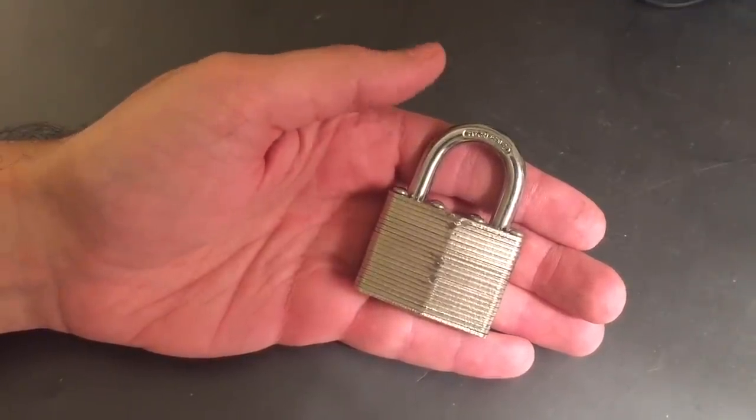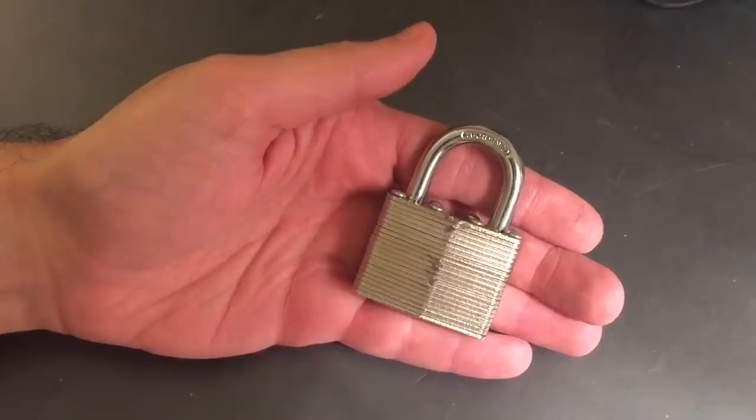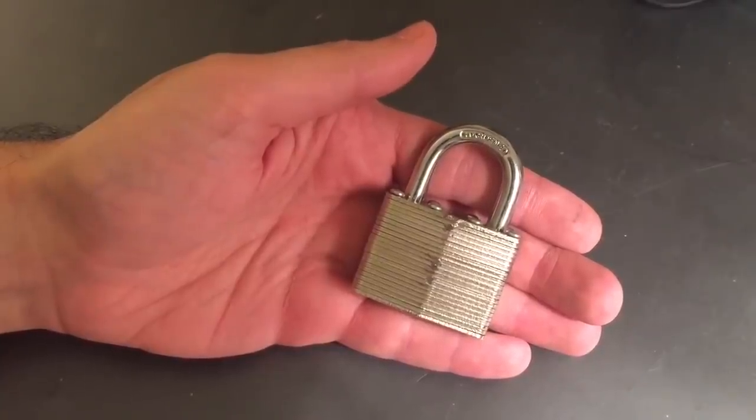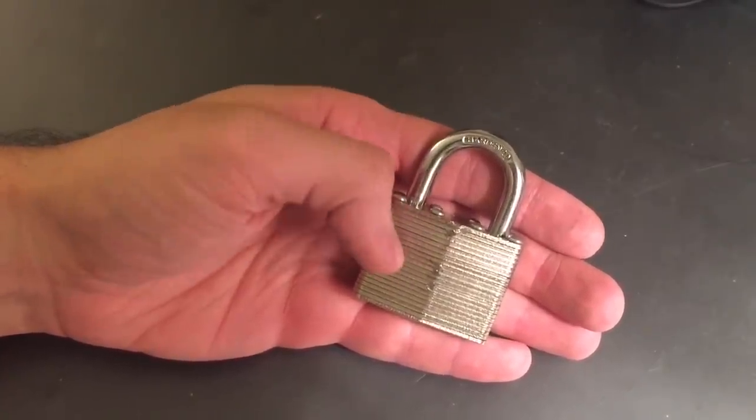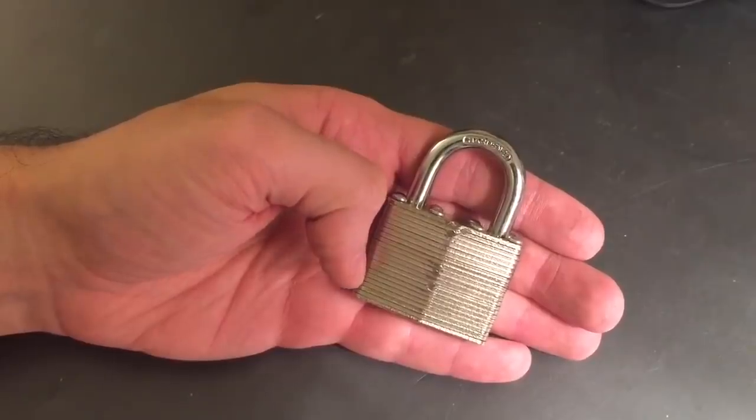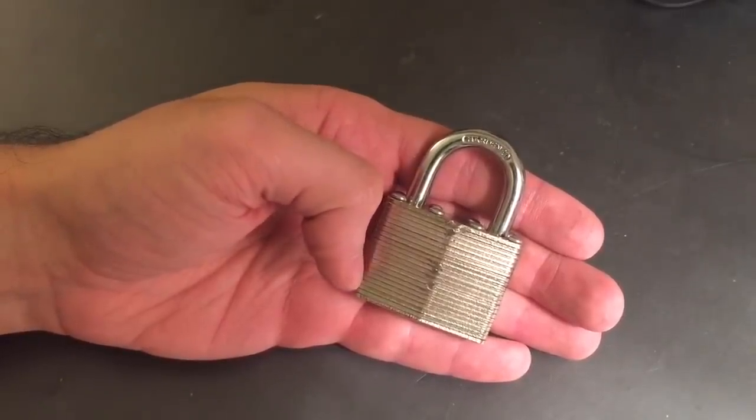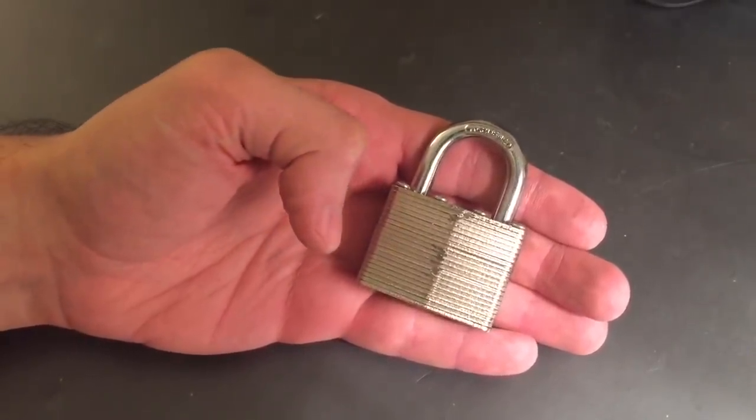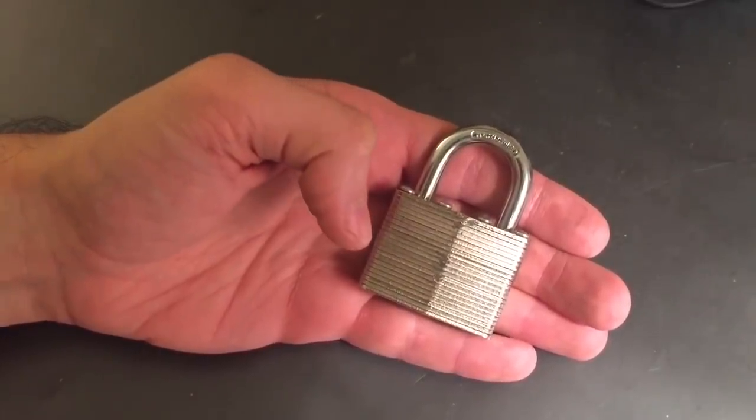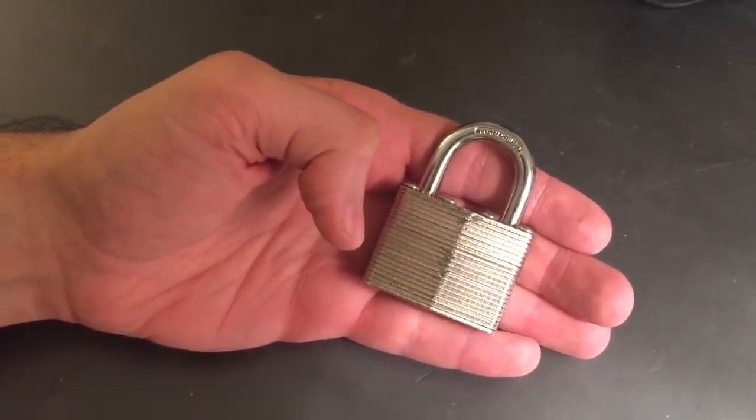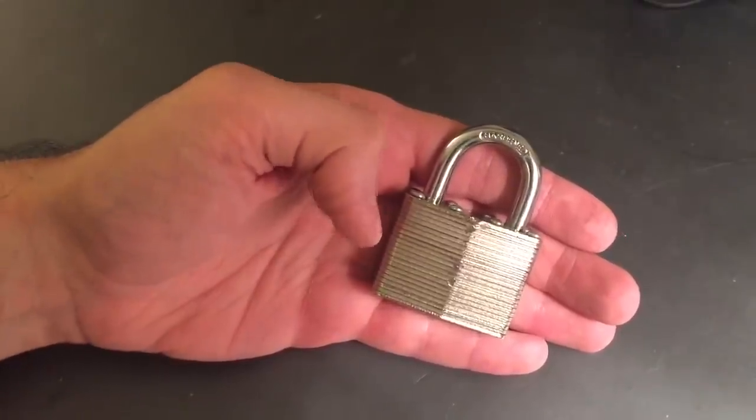This is The Lockpicking Lawyer, and I am about to show you the worst lock in the world. Papa Gleb discovered this lock when he was trying to impression a key for it, and he discovered that he couldn't impression a key. He investigated to see why that was and came to a pretty interesting conclusion.